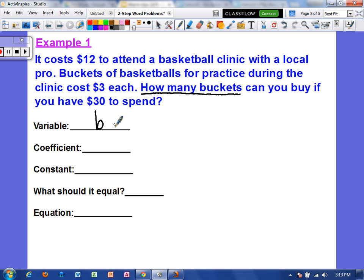Now the coefficient, that's the number that has to be multiplied times the number of buckets, and it says that buckets cost three dollars each, so my coefficient would be three. Now the constant would be twelve dollars because it already costs twelve dollars to attend, so you have to pay twelve dollars in addition to the cost of the basketballs. And then what should it equal? Well the problem wants to know how many buckets you can buy if you have a total of thirty dollars to spend.